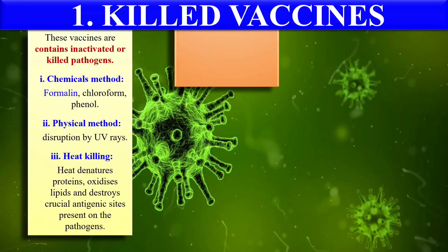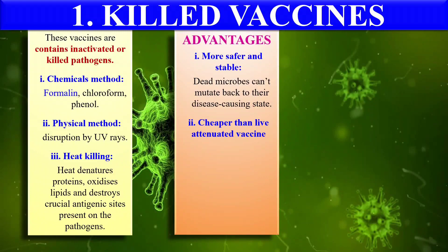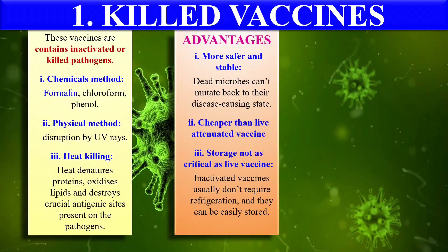The advantages of killed vaccines: first, they are safer and more stable, because we are using the killed pathogen, meaning there is no chance of developing disease inside the host. Second, they are cheaper than live attenuated vaccines because we can easily inactivate the pathogen. Their storage is also not very critical — they do not require refrigeration and can be stored as is.